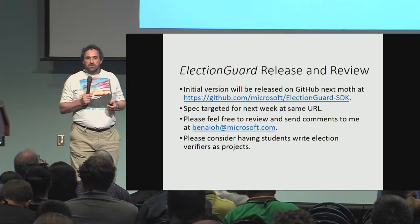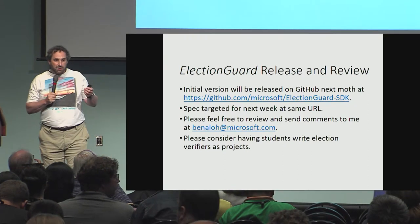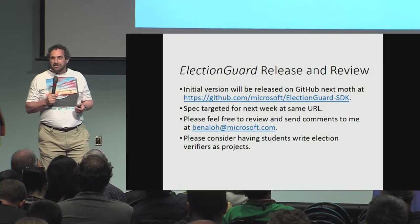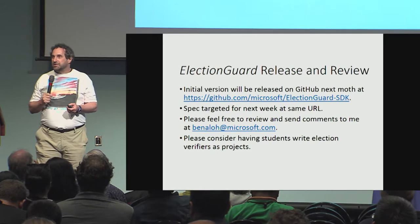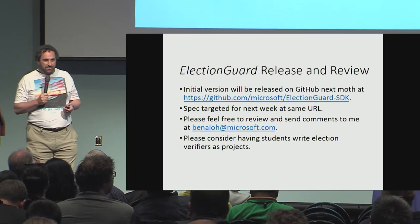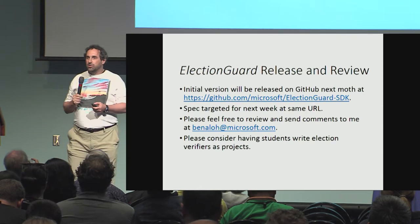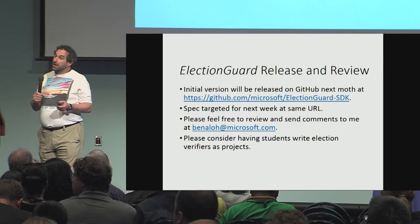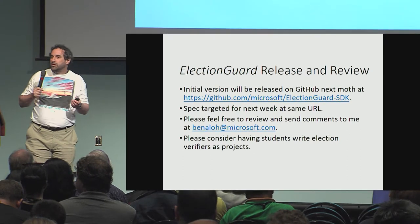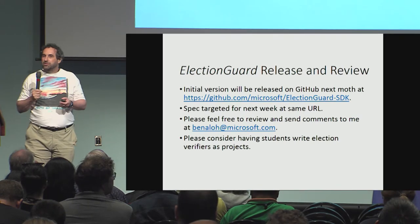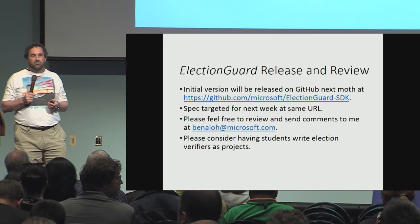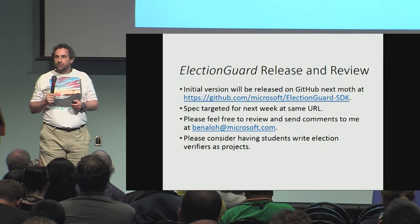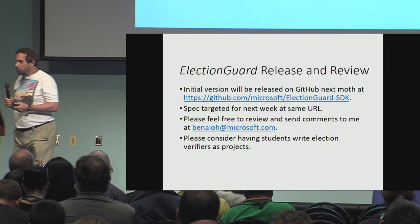The first version of this code is going to be released next month on GitHub. Feel free to come talk to me about it. We're trying to get the spec out as early as next week, if I can get off the stage and get this finished. Send comments to me — we want as much open review as possible. And as projects for your students, writing a little election verifier might be a one or two week class project, or maybe a little independent study for the early ones. This is a nice little crypto project for people to do. Hope you're interested, hope we'll be using this.